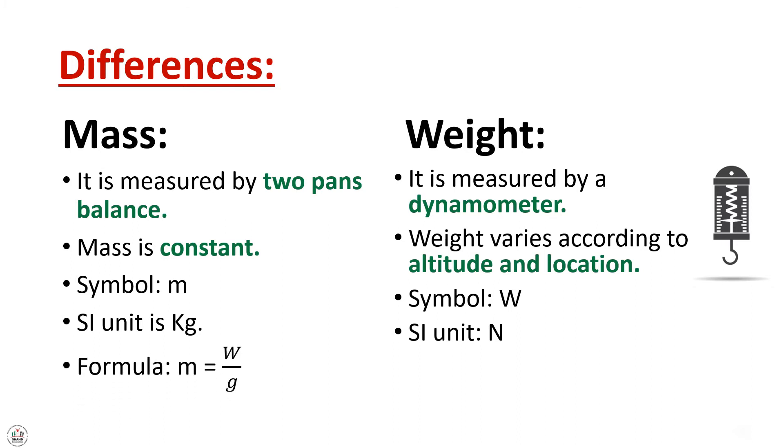And the formula to calculate mass is M equals to W over G. Mass equals to weight divided by gravity. Whereas, if we calculate the weight, weight equals to M times G. Weight equals mass times gravity.